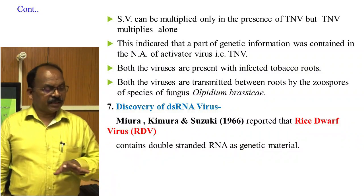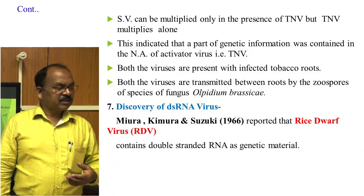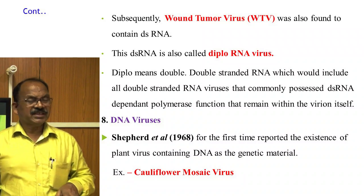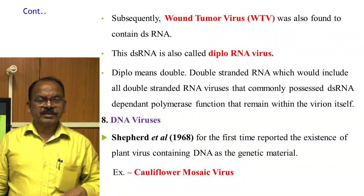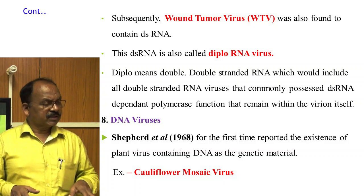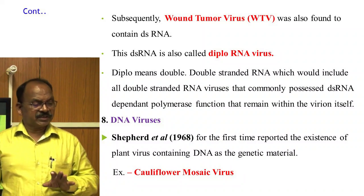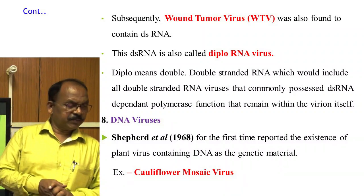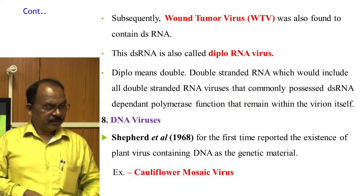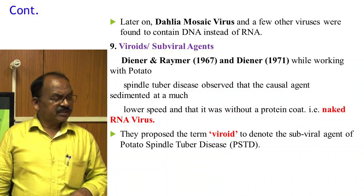Discovery of Double-Stranded RNA Virus: Miura, Kimura, and Suzuki in 1966 reported that Reovirus contains double-stranded RNA as genetic material. Subsequently, one tumour virus was also found to contain double-stranded RNA, also called dsRNA virus. DNA Viruses: Shepherd et al. in 1968 for the first time reported the existence of plant viruses containing DNA as genetic material — for example, Cauliflower Mosaic Virus. Later, Dahlia Mosaic Virus and a few other viruses were found to contain DNA instead of RNA.